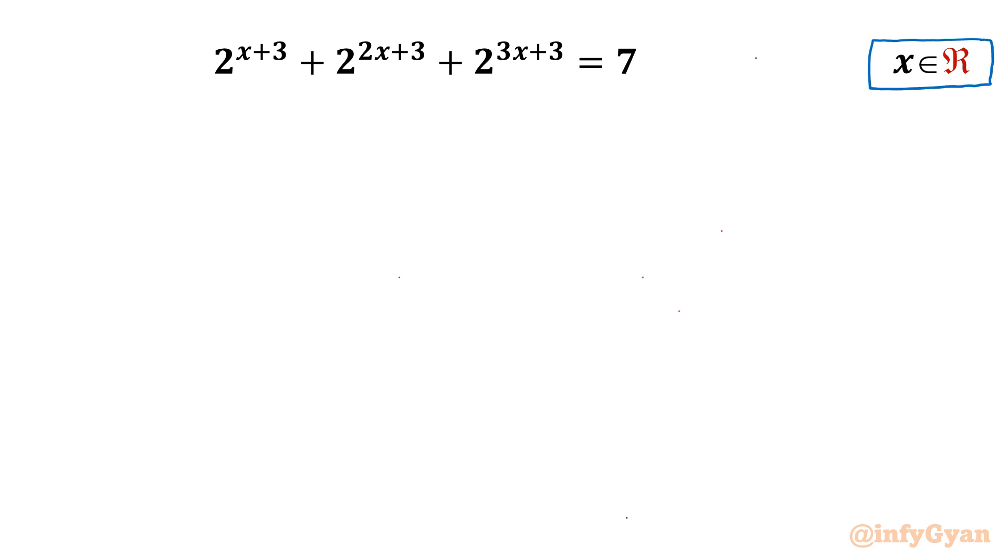Let's get started this video by writing the two powerful properties of exponents. First one is x^(a+b), then we can write this as x^a times x^b. Property number 2, it is power rule basically (a^b)^c, this can be written as (a^c)^b and further we can write a^(bc).